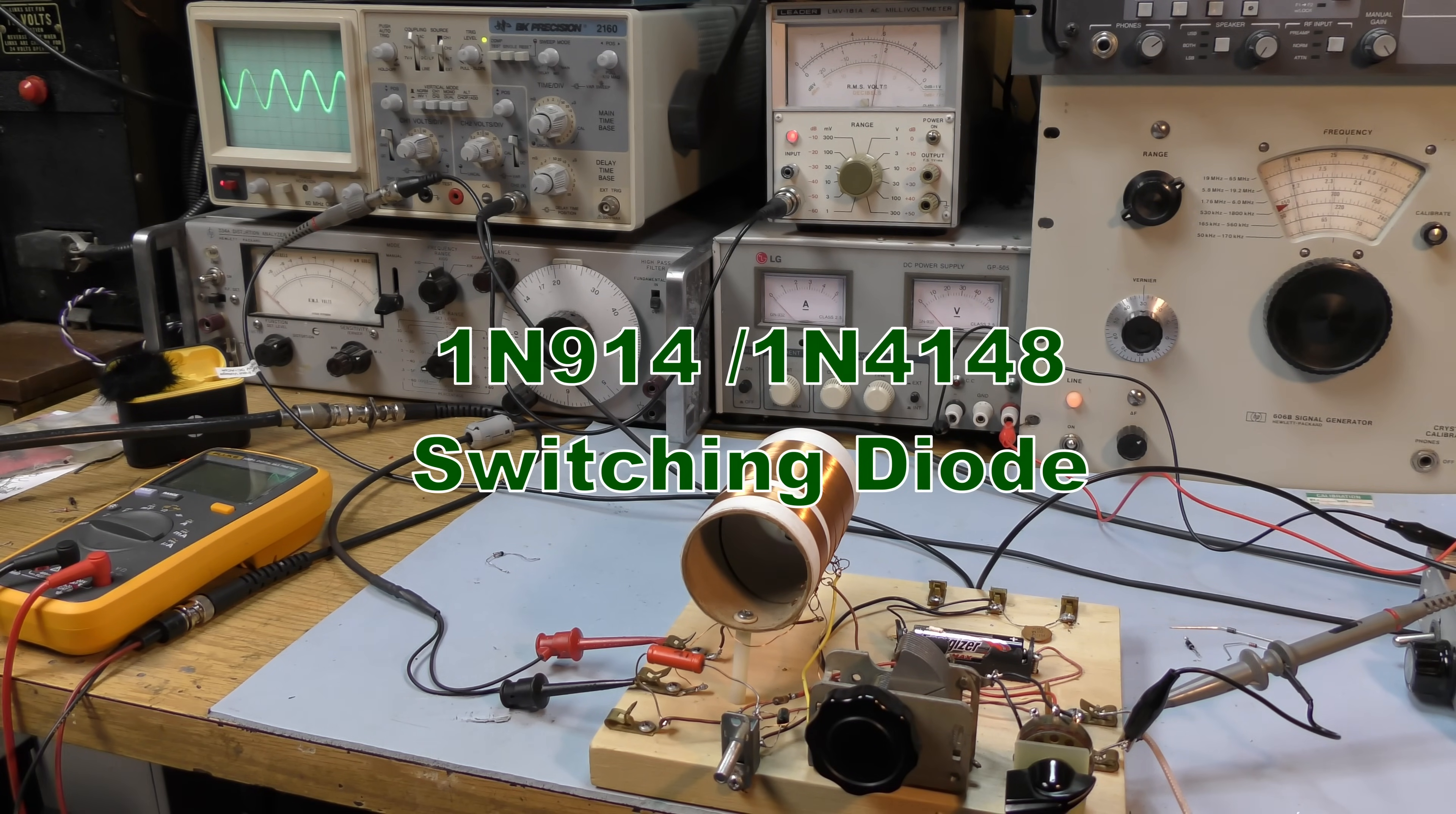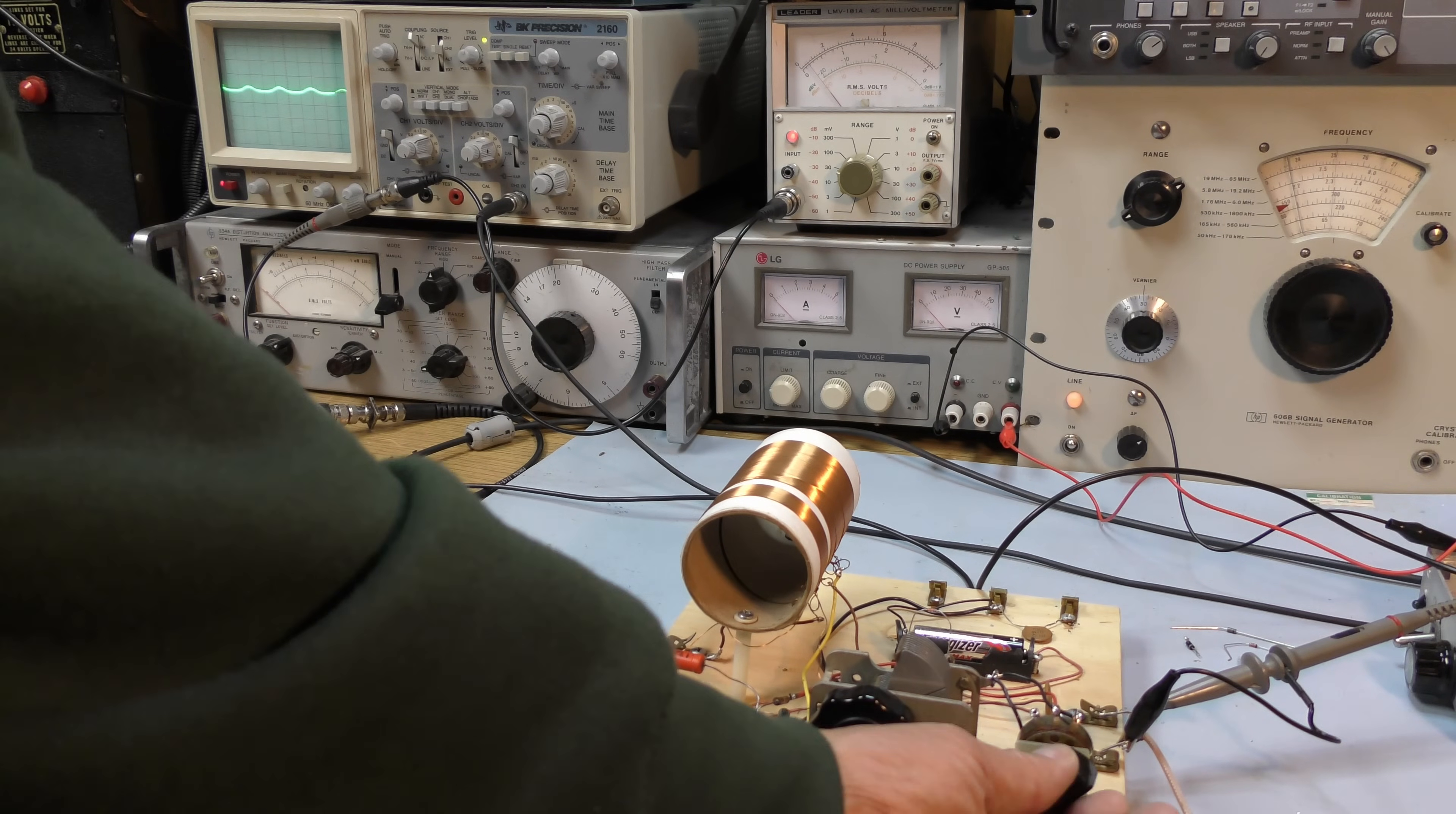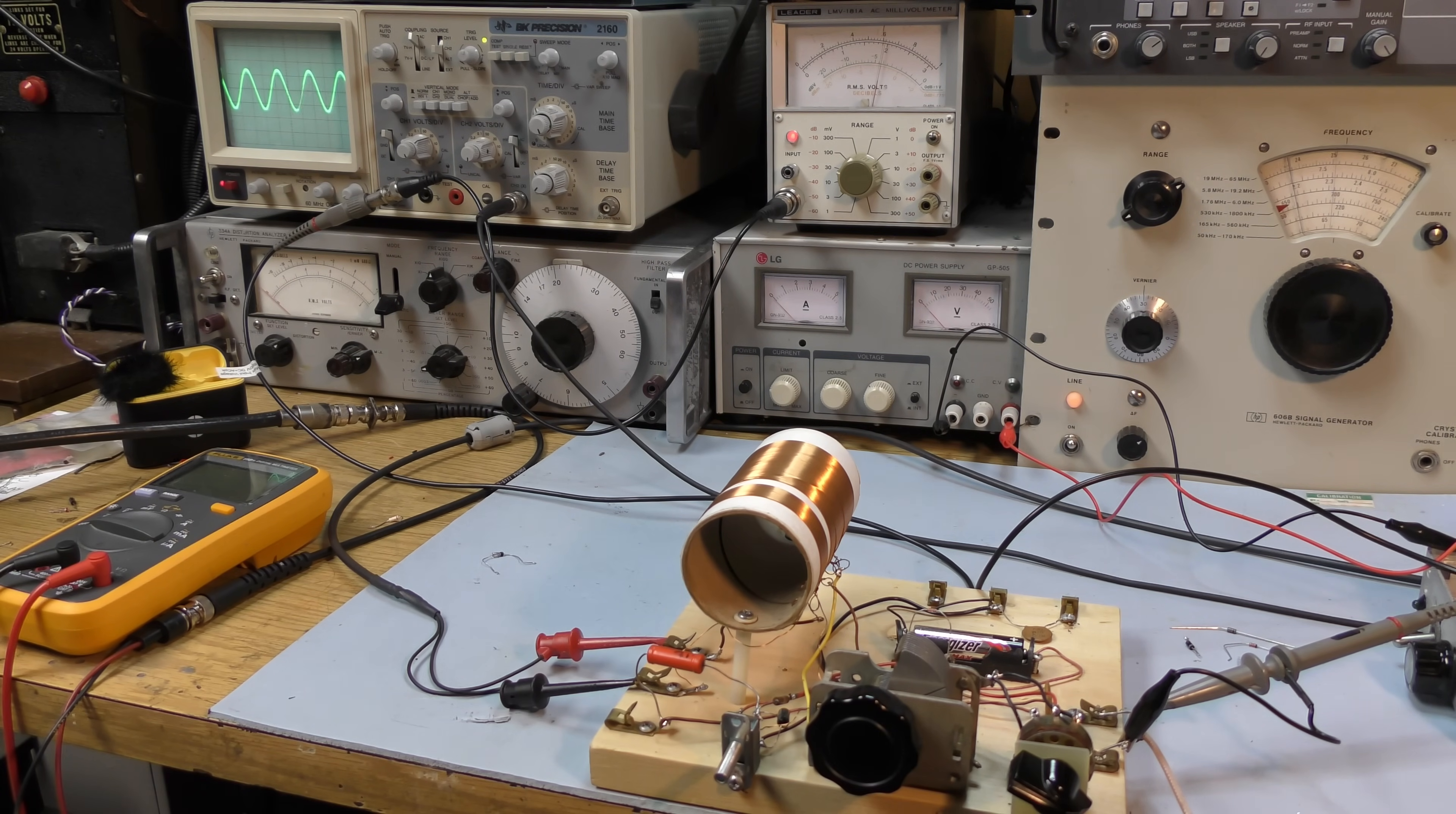Let's try your old friend, the 1N914, 1N4148. With the 1N4148, we can see that we're barely turning the diode on at all, getting almost no output. If we measure this, it's down into the 3 millivolt RMS region. So let's introduce some bias. I'd say it's up around what we're getting with the germanium diode. So no bias on the 1N4148 - very poor. With bias, it's doing as well as the germanium diode.